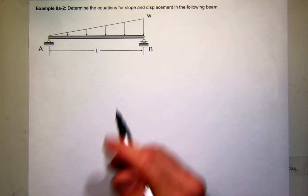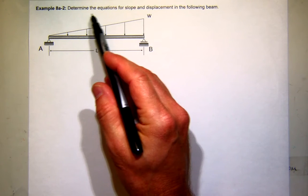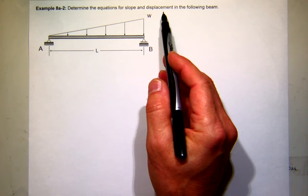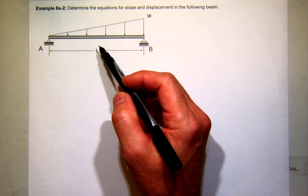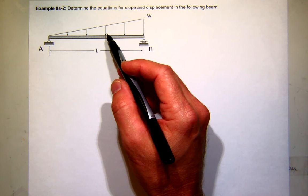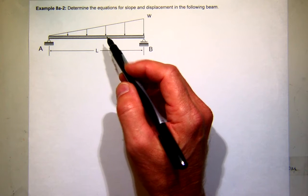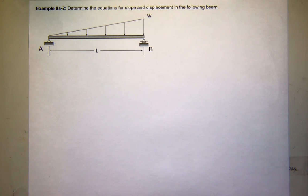All right, so we can start on this problem. The first thing we need to do, we want to write an equation for the slope and displacement. So the way we've talked about up to this point, using direct integration, we have to find an equation for the moment.